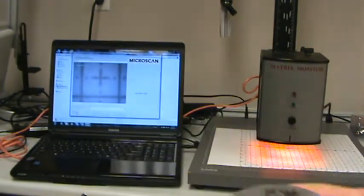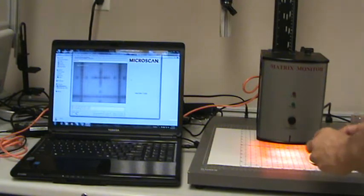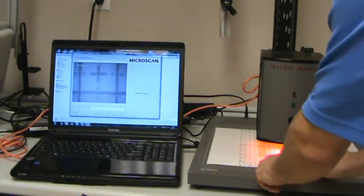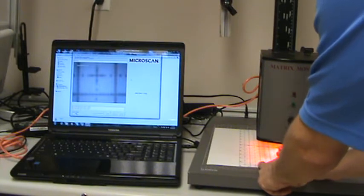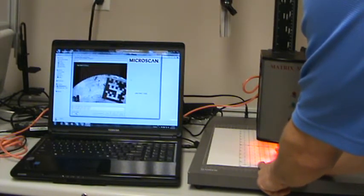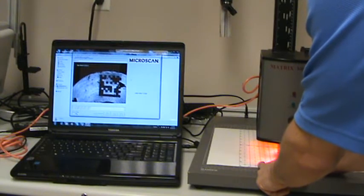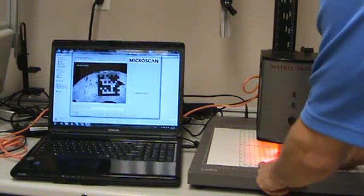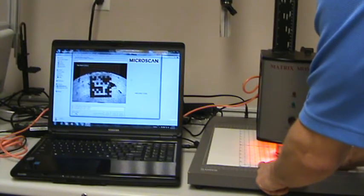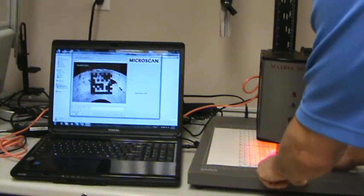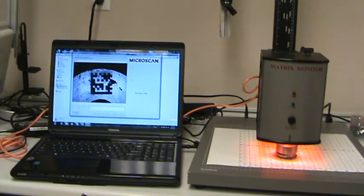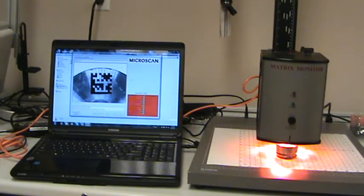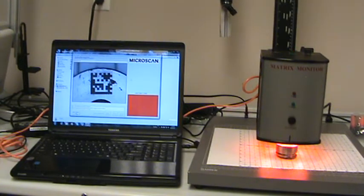So what I'll do is go ahead, walk over to the verifier, put the mark under the verifier, and if you look at the screen on the left-hand side there, you'll see the mark come into view. We'll move it into approximately the center of the screen, and from there I'll just go ahead and hit the trigger button, and what you're going to see happen is you're going to see the multiple lights on the verifier take a look at the mark, and many of them will grade it.